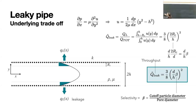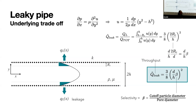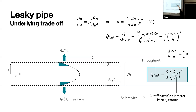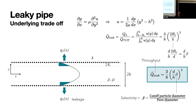D is the pore diameter - typically really tiny. We're going to think about how to design these, considering parameters like the pore width, height, and angle. This will give you the rough scaling. The factor in parentheses is the particle diameter over the channel height. So the pore diameter over channel height, and the selectivity is the particle diameter over pore diameter - meaning it's independent of the pore diameter, because pore diameter cancels out.